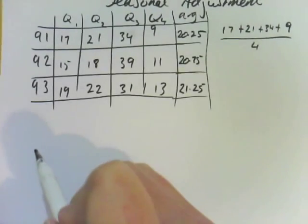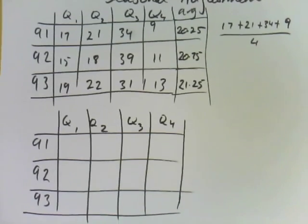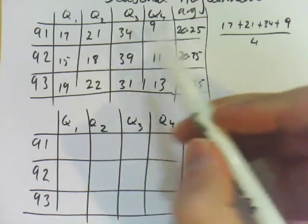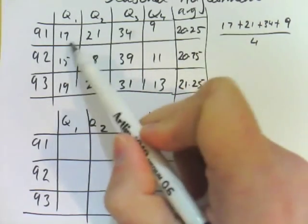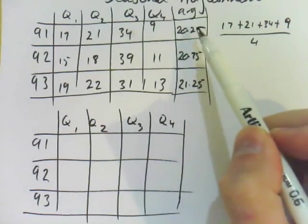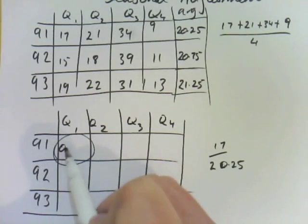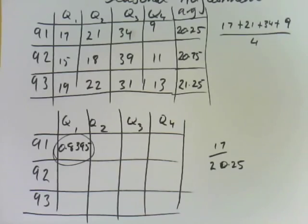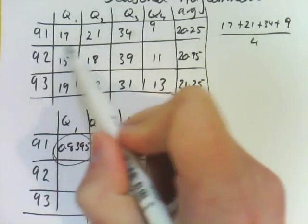I've redrawn the table. What we need to do is take this value here, this 17, and divide that by the average for that year, and that will give us 0.8395. Again, you take the actual data point and you divide that by the average to get the seasonal index for that particular section.